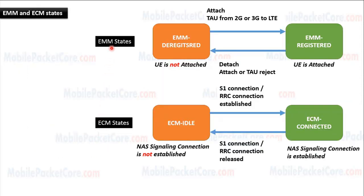In summary: EMM state describes if the UE is attached to the network or not attached to the network. It can be EMM registered, where the UE is attached to the network, or EMM deregistered, where the UE is not attached to the network. ECM state describes if the UE is connected to the network or not connected to the network. It can be ECM connected, where the NAS signaling connection is established, or ECM idle, where the NAS signaling connection is not established.